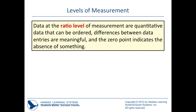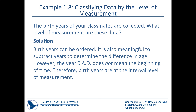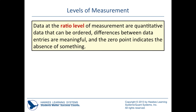Data at the ratio level of measurement are quantitative, can be ordered, differences are meaningful, and zero indicates an absence of something. The key distinction between interval and ratio is the zero: if zero indicates an absence of value, it's ratio; if zero doesn't indicate an absence, it's interval.